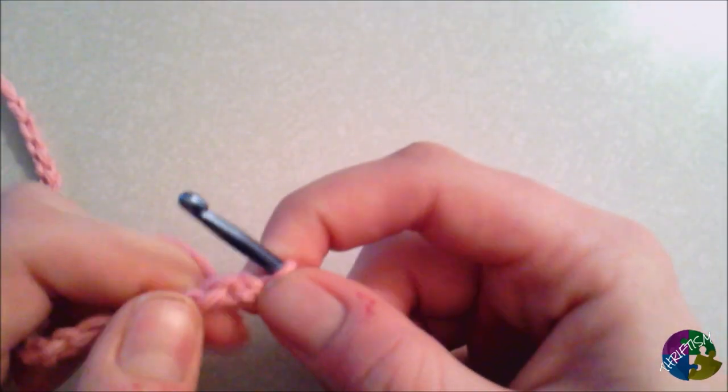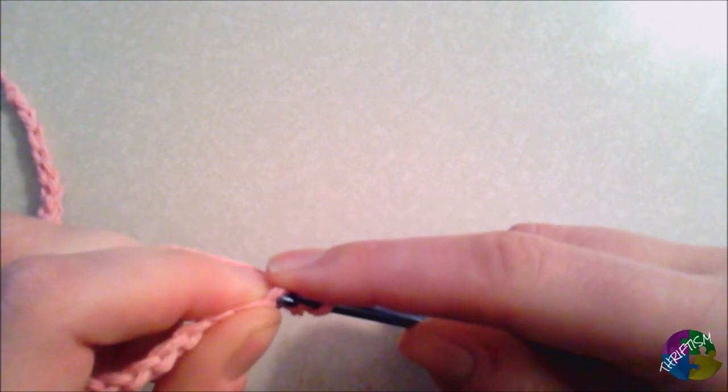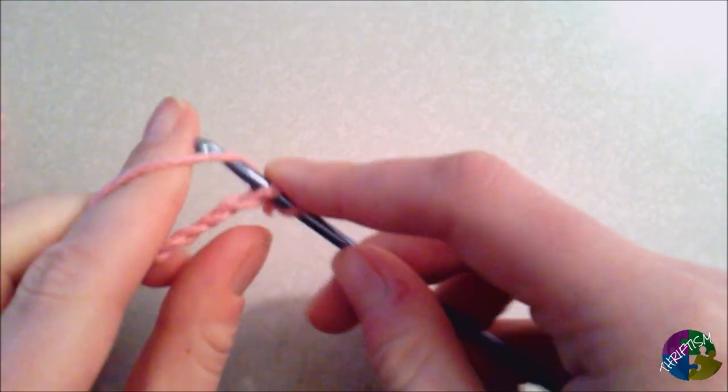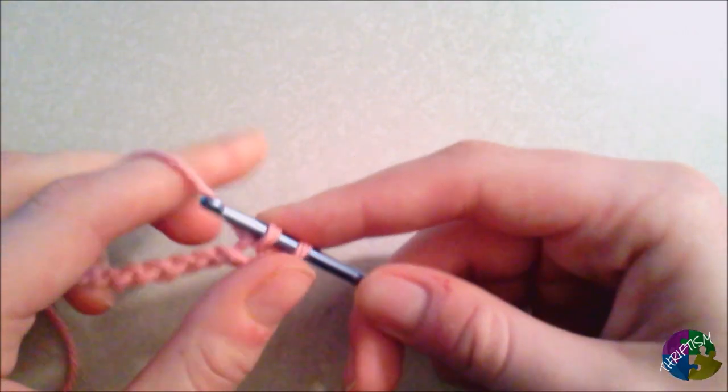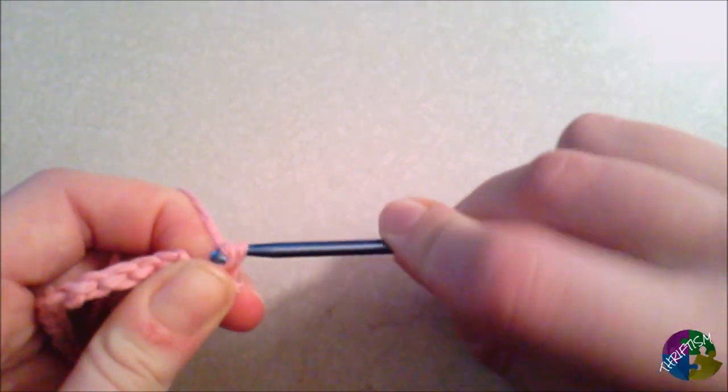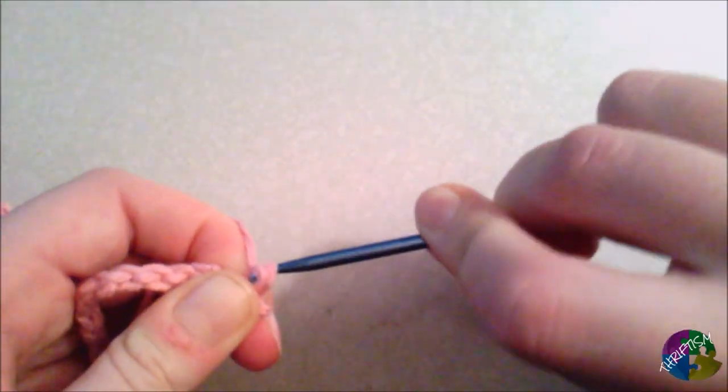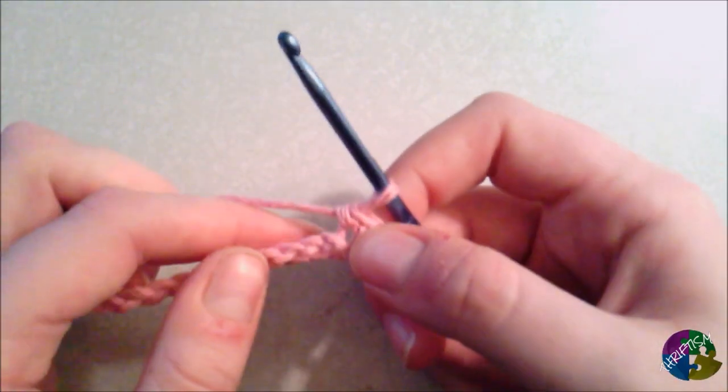It looks like I went through two loops there, so we'll try again. Then go through the top loop here, yarn over and pull through. Once you have that, yarn over again and pull through both stitches. If you pull tighter, you can see it's a little more difficult to do.